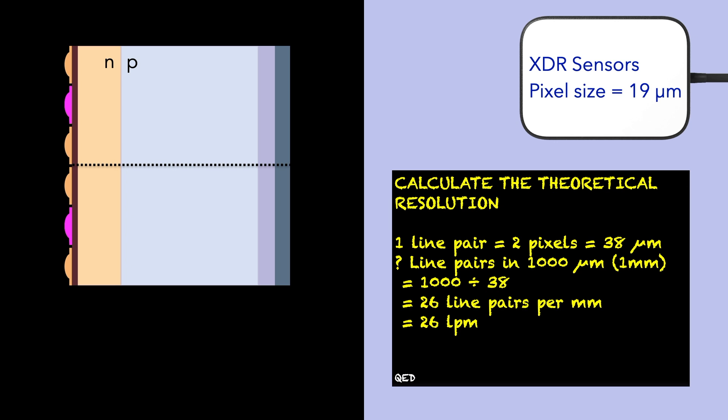The pixel size of a sensor is an important consideration. Using the pixel size, you can calculate the resolution of an image that you can expect to see. A higher resolution image provides more detail. Using the pixel size, you can calculate the theoretical resolution of the image from an XDR sensor, and this is 26 line pairs per millimeter.